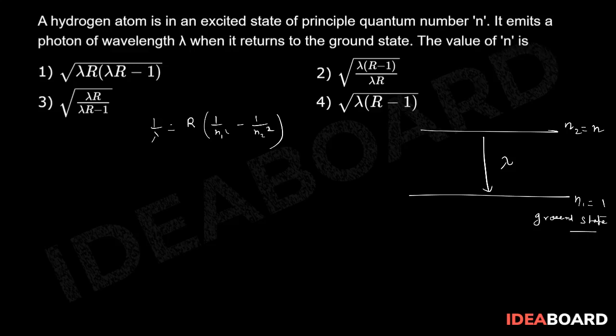If it comes into the ground state it emits a photon which is having wavelength lambda. I can apply this thing in our formula. Here lambda is equal to lambda, N1 is equal to 1, N2 is equal to N. If you substitute the values we get R into 1 upon 1 square minus 1 upon N square.